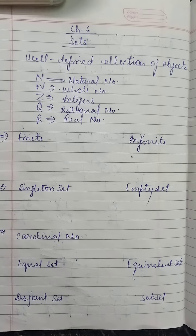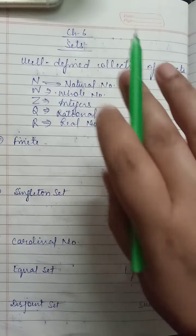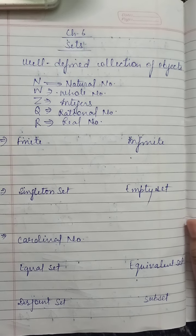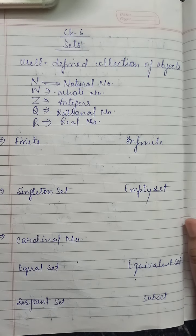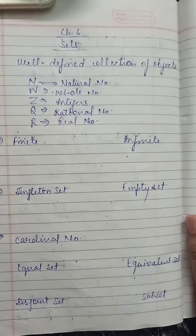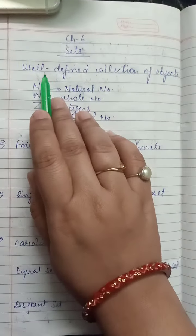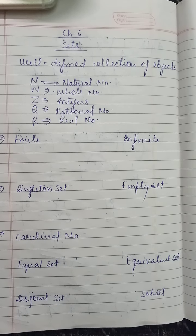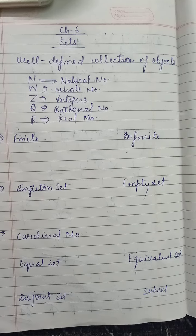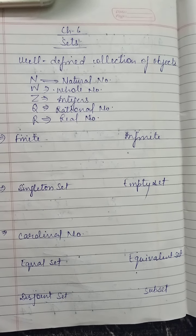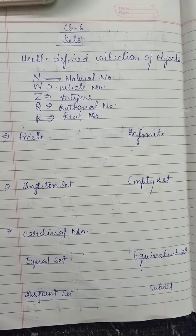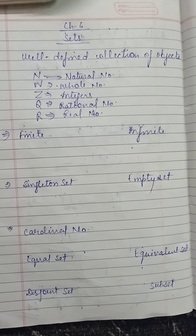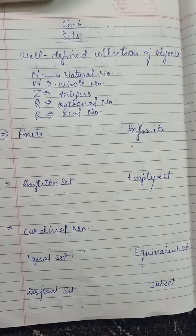Good morning dear students, today I am going to begin Chapter 6, that is Sets. You have studied this in your previous class, Class 7, and almost all the topics of sets are the same. A set is the well-defined collection of objects. If the collection of objects can be defined, then it is called a set. For example, a set of stars — all the stars will be counted, it is well defined.